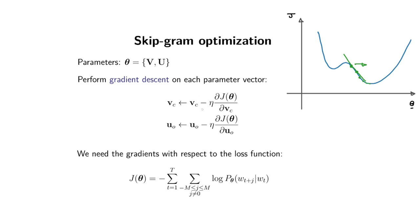You're going to do that for each of the parameter vectors in your model, which for SkipGram is a whole set of V vectors for your center words and a whole set of U vectors for your context words. Now to do this, we need the gradients with respect to the loss function. We've defined the loss function already and we need the partial derivatives with respect to each of the vectors in our set of parameters.